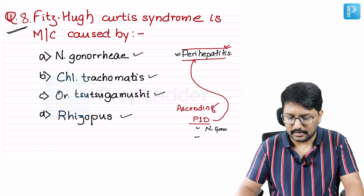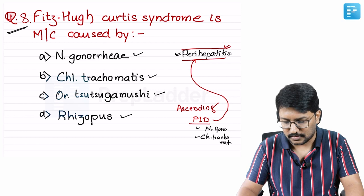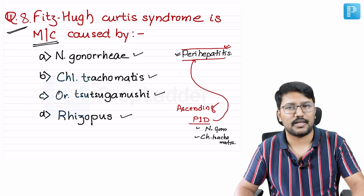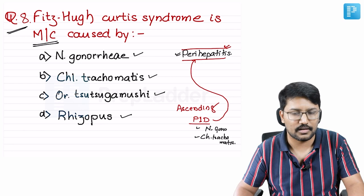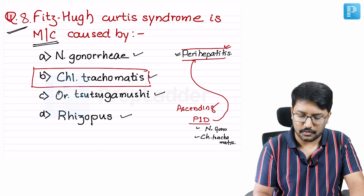The causes for this ascending PID leading to Fitzhugh-Curtis syndrome are N. gonorrhea and Chlamydia trachomatis. Both options A and B are correct, but the question asks for the most common. The most common is Chlamydia trachomatis, which is the most common cause for pelvic inflammatory disease - much more common than N. gonorrhea. That is why Chlamydia trachomatis is the right answer.